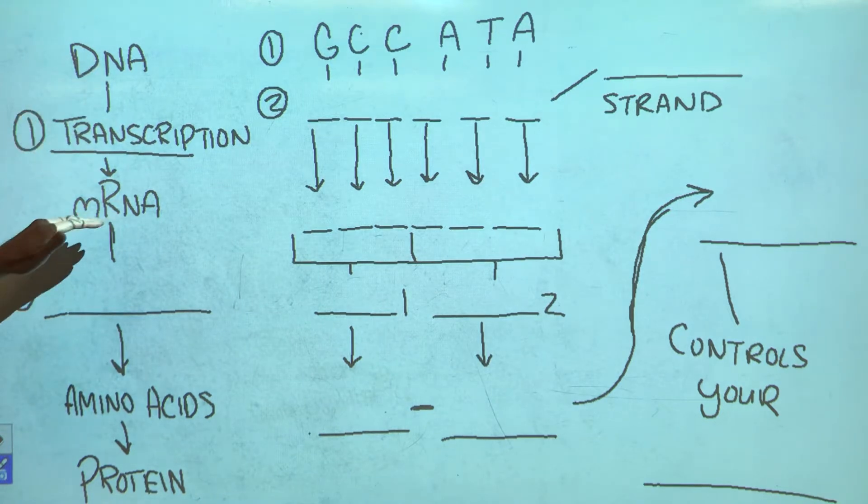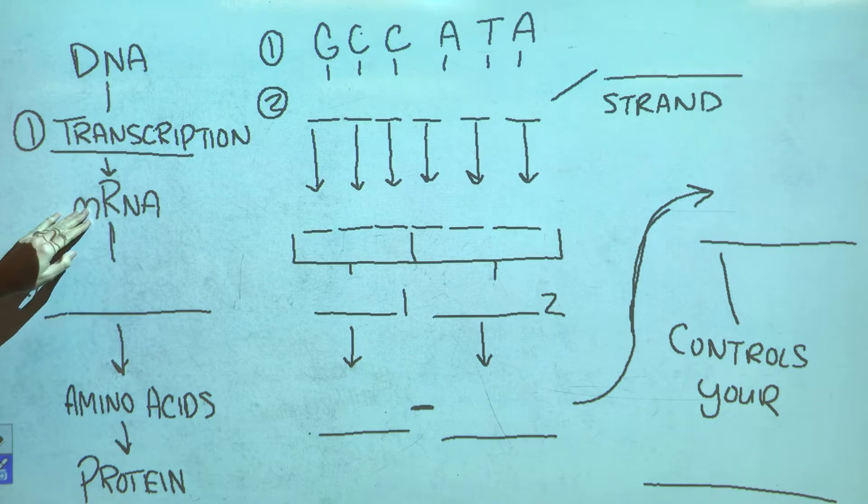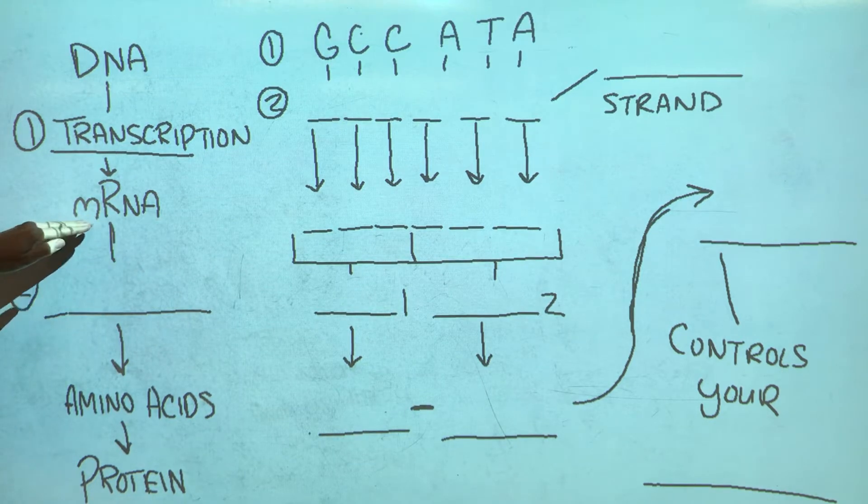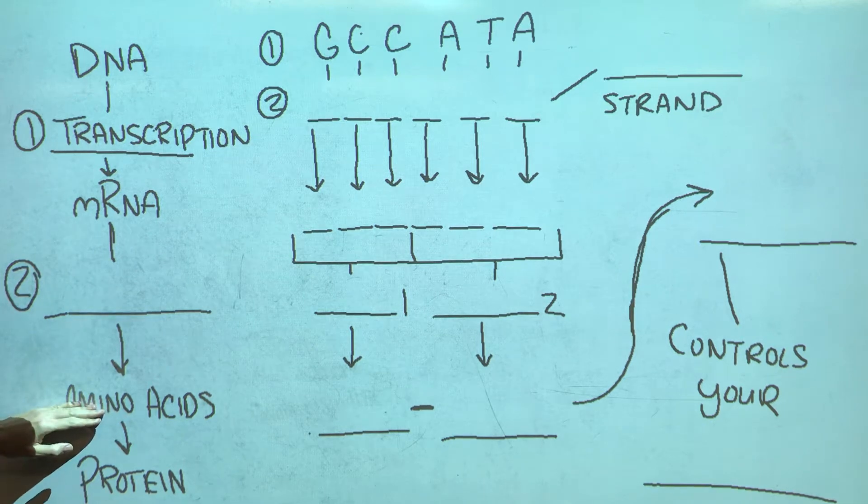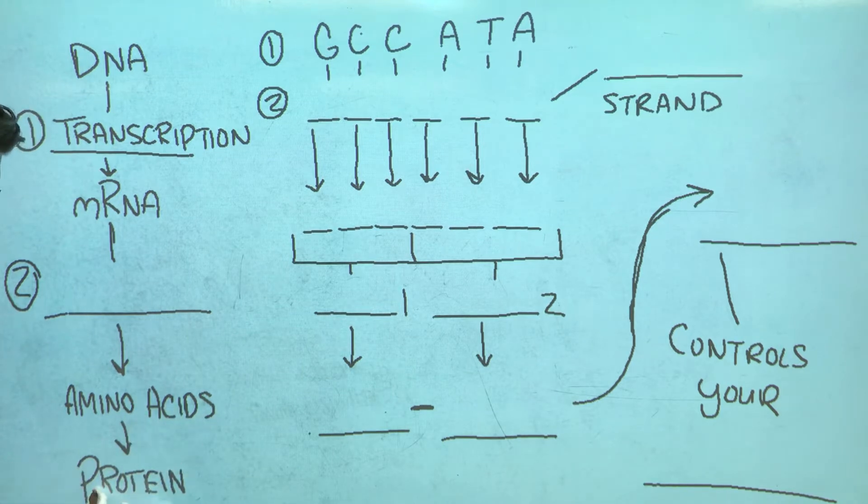After we have converted DNA into a strand of mRNA, we now have to use that mRNA to tell us which amino acids we're going to make, and then we're going to link those amino acids together to create a protein.